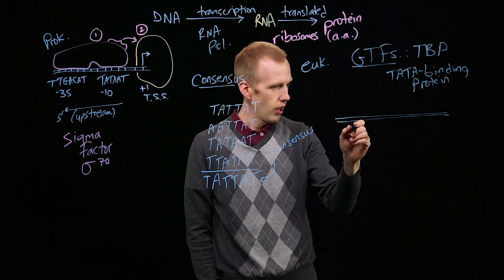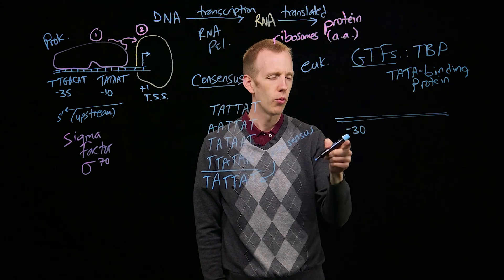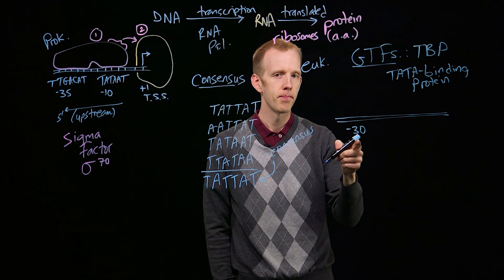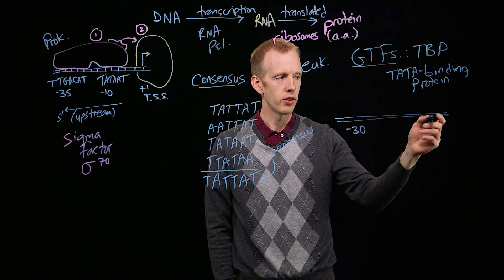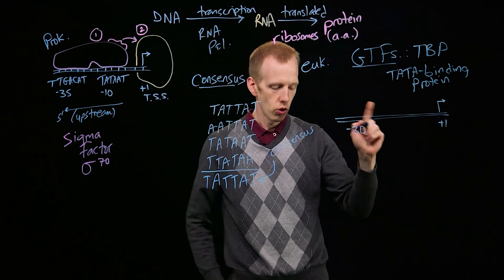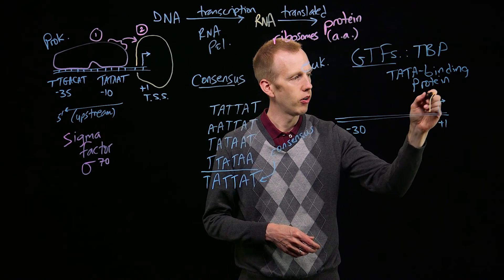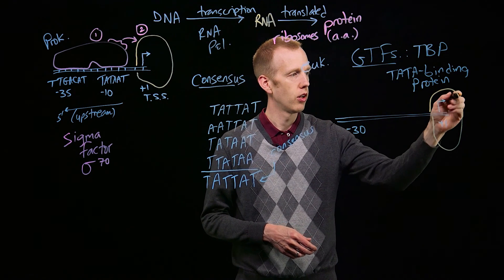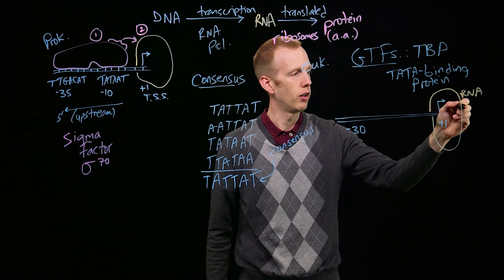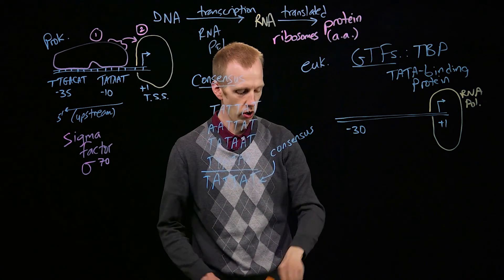And in eukaryotes, at about minus thirty, where is plus one here? Plus one is going to be over here somewhere, and that's where the transcription start site is. So, we know that that's where we're going to have RNA polymerase located, RNA-Pol. That's where it's going to bind and start reading the DNA and producing an RNA transcript.